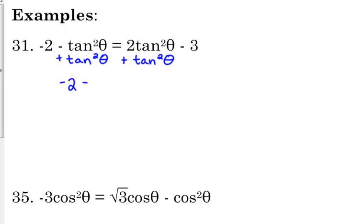I started with two tangent squared and I added one, so now I have three tangent squared. And that minus three is there on the end — it's not with the theta because it's not inside parentheses. Now our trig equation is on one side. We need to isolate it, so we begin by adding three. Negative two plus three is one.